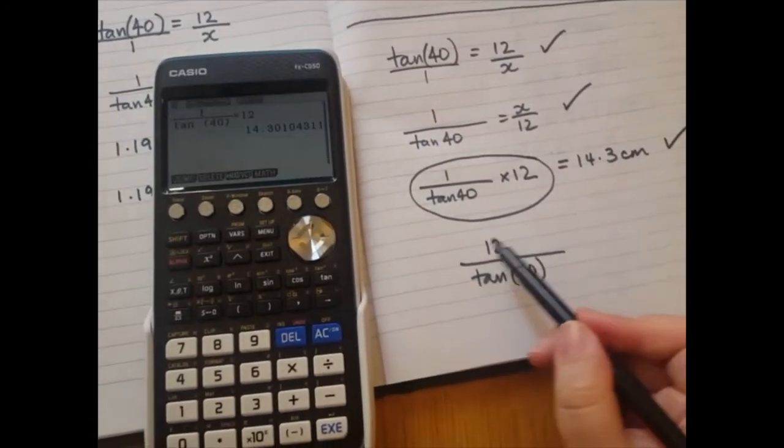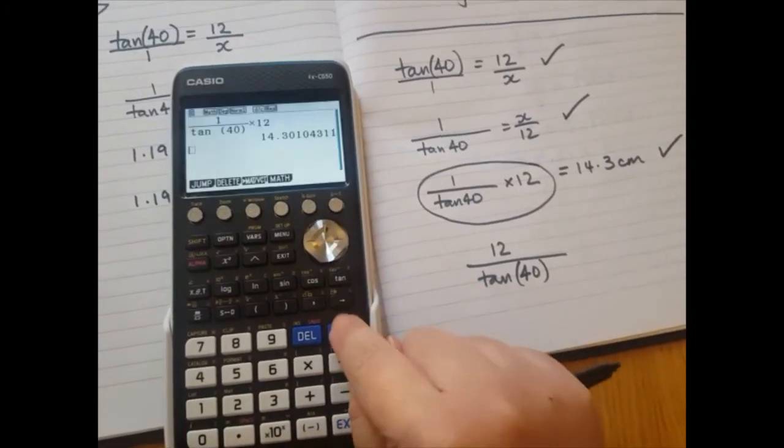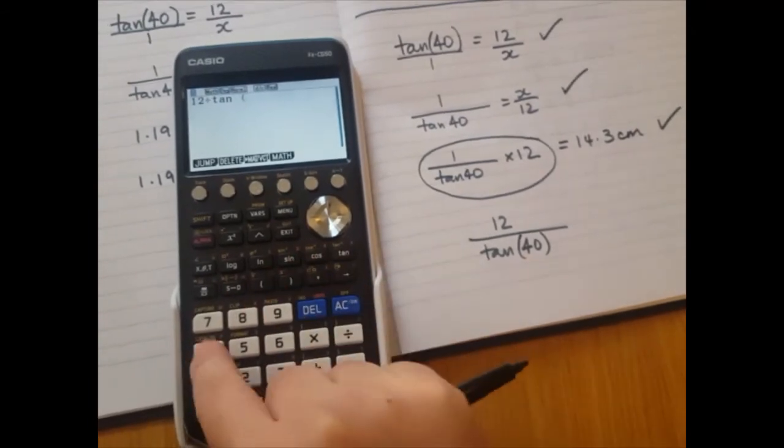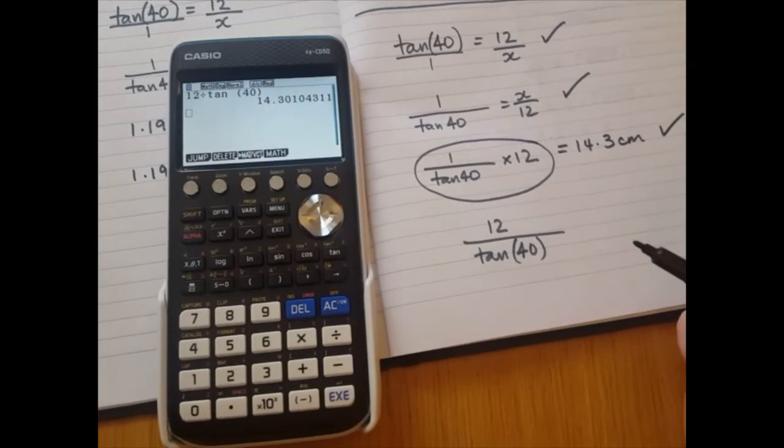So you could put this directly in your calculator in one step and that works. So 12 divided by tan 40 will give you the answer with one step.